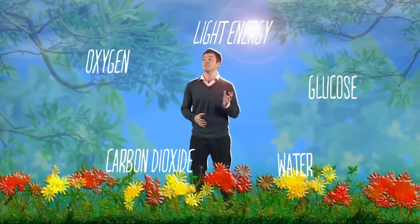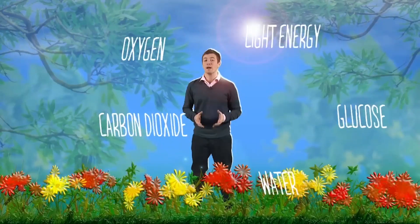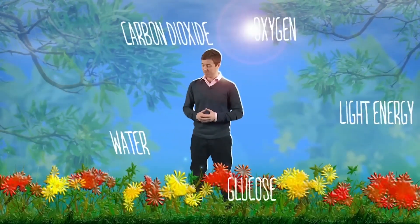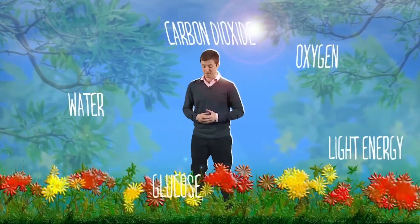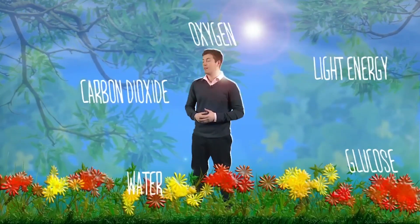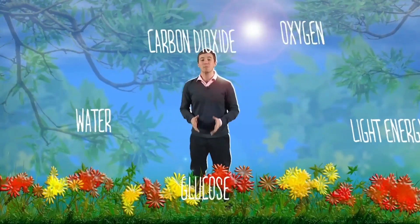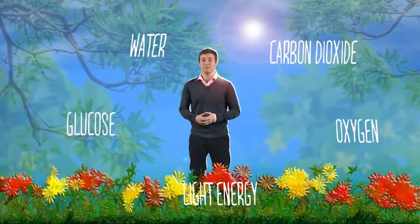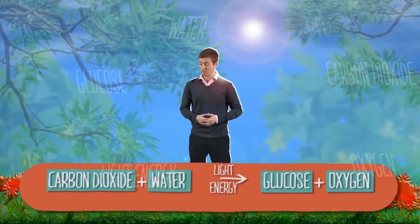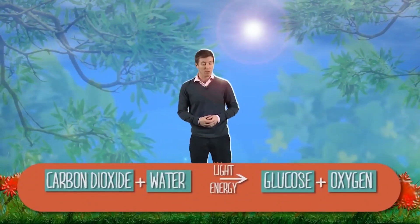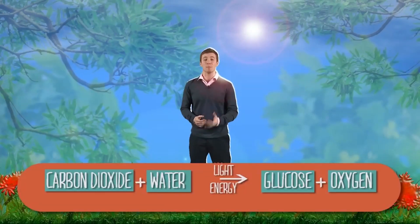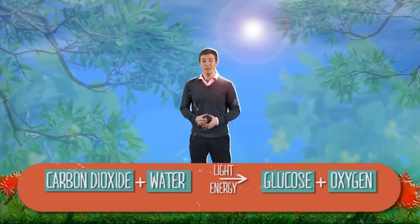Can you think of where these might go into the equation? If you need a clue, think about what plants need to grow and also what they make. We can also show this using a balanced symbol equation. Let's take a look.